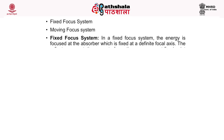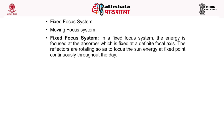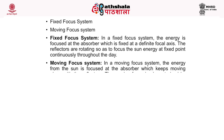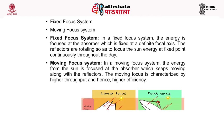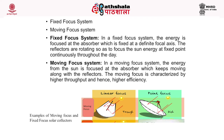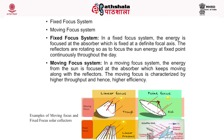Solar collectors are classified based on the movement of the absorber into fixed focus and moving focus systems. In a fixed focus system, energy is focused at an absorber fixed at a definite focal axis, and the reflectors rotate to focus sun energy at the fixed point continuously throughout the day. In a moving focus system, the energy is focused at an absorber which keeps moving along with the reflectors, characterized by higher throughput and hence higher efficiency.